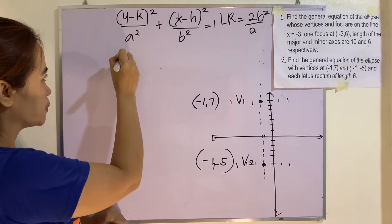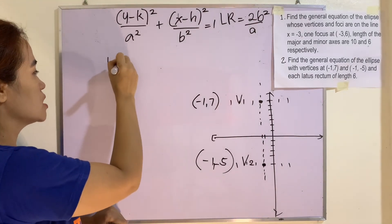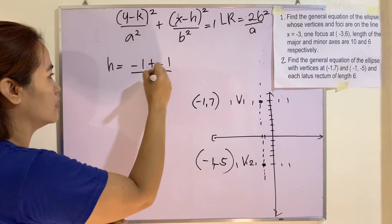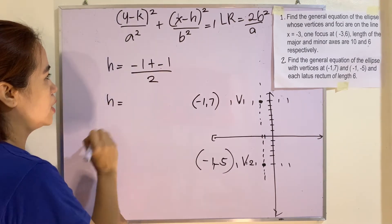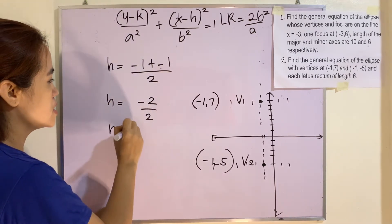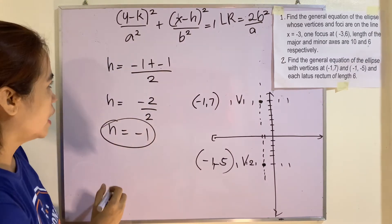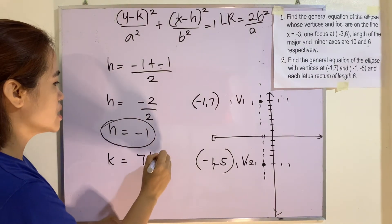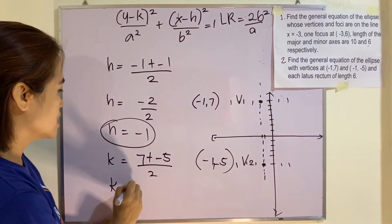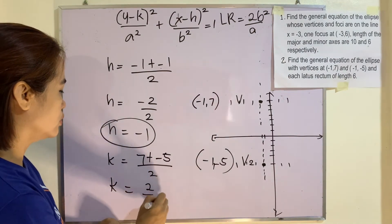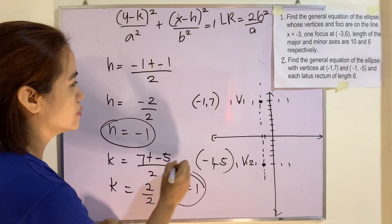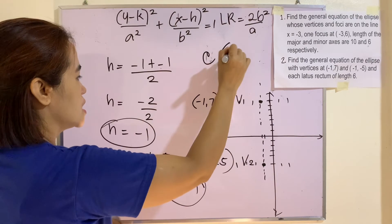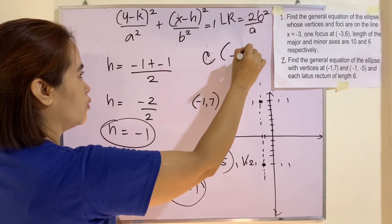For the center: h = (-1 + (-1)) / 2 = -2 / 2 = -1. For k: (7 + (-5)) / 2 = 2 / 2 = 1. So the center is at (-1, 1).